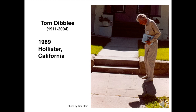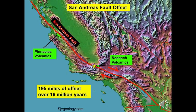In 1953, geologists Tom Dibley and Mason Hill proposed a radical idea regarding the Nienach volcanic rock and the San Andreas Fault. Dibley, a preeminent California field geologist, is pictured in 1989 observing the Calaveras Fault in Hollister, California. In 1953, most scientists thought that offset along faults like the San Andreas was a few miles at most.